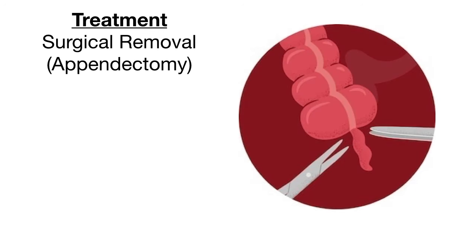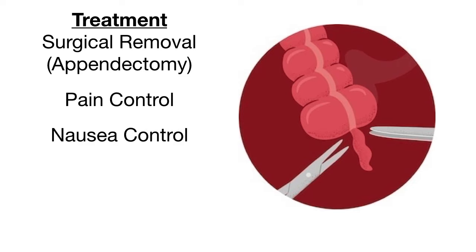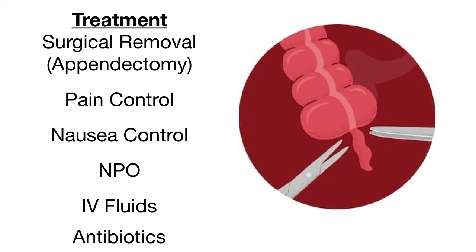For treatment, in the majority of cases the appendix is going to be surgically removed, known as appendectomy. You're also going to want to control the patient's pain and any other symptoms, including nausea and vomiting. The patient should be kept NPO — nothing to eat or drink by mouth — so they're prepared surgically, and will likely receive IV fluids. In conjunction with the surgical consultation, antibiotics may also be considered.